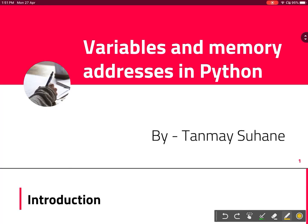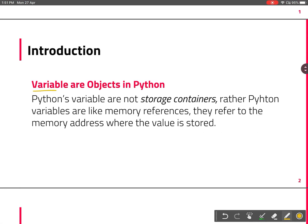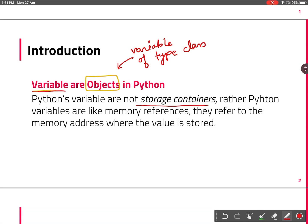In this class we will see how Python assigns memory to its variables. Like everything, variables are also objects in Python. An object is itself a variable of type class. Python variables are not storage containers — rather, Python variables are like memory references; they refer to the memory addresses where the value is stored.